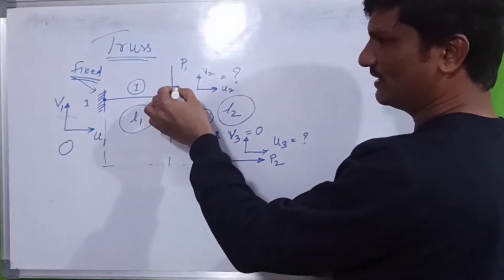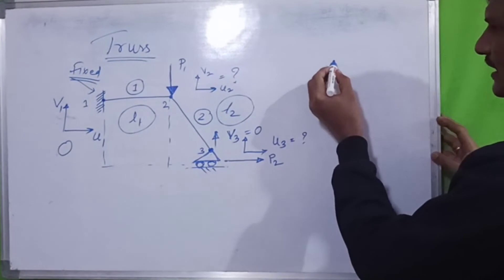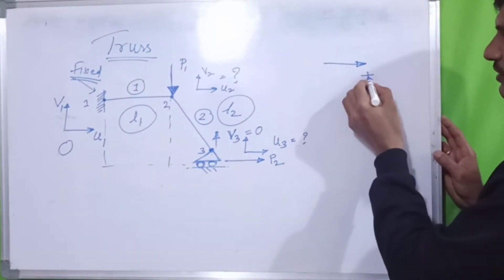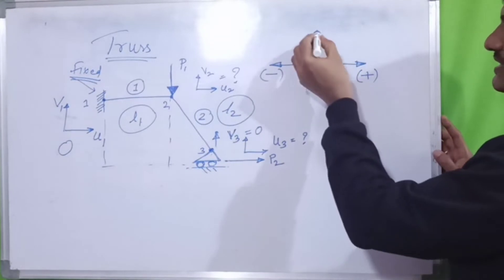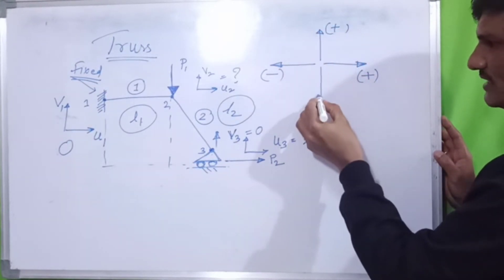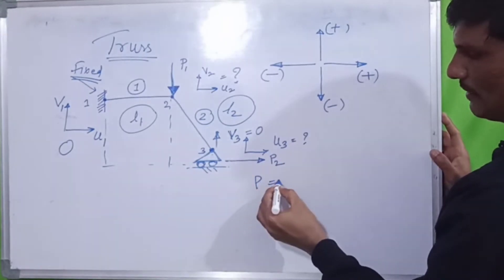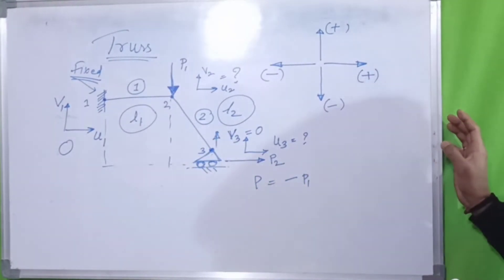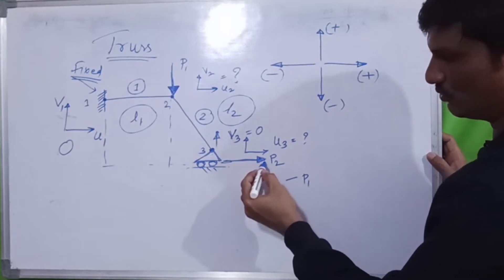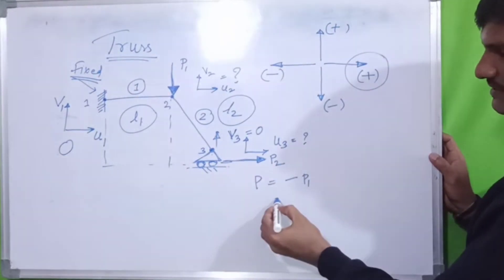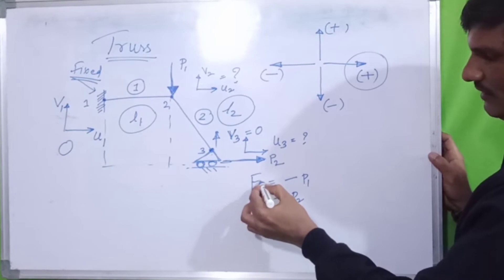Many students ask about the forces. When a force is applied — for example at node two — if the force is applied towards the right side, the value will be positive. If the force is applied towards the left side, it will be taken as negative. If the force is applied upward, it is positive; if applied downward, it is negative. So since the force here is applied downward, you take it as minus P1. At node three the force is applied towards the right, so it is plus P2.